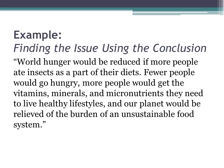Here's an example of finding the issue using the conclusion: 'World hunger would be reduced if more people ate insects as part of their diets. Fewer people would go hungry, more people would get the vitamins, minerals, and micronutrients they need to live healthy lifestyles, and our planet would be relieved of the burden of an unsustainable food system.' This is a perfect way to end an essay about using bugs as a dietary option. The issue is really in that first sentence — we could help alleviate world hunger if people ate crickets and ants. In parts of Asia, eating bugs is a standard part of the diet, whereas in the United States, we smack them with our shoe but wouldn't put them on our toast.